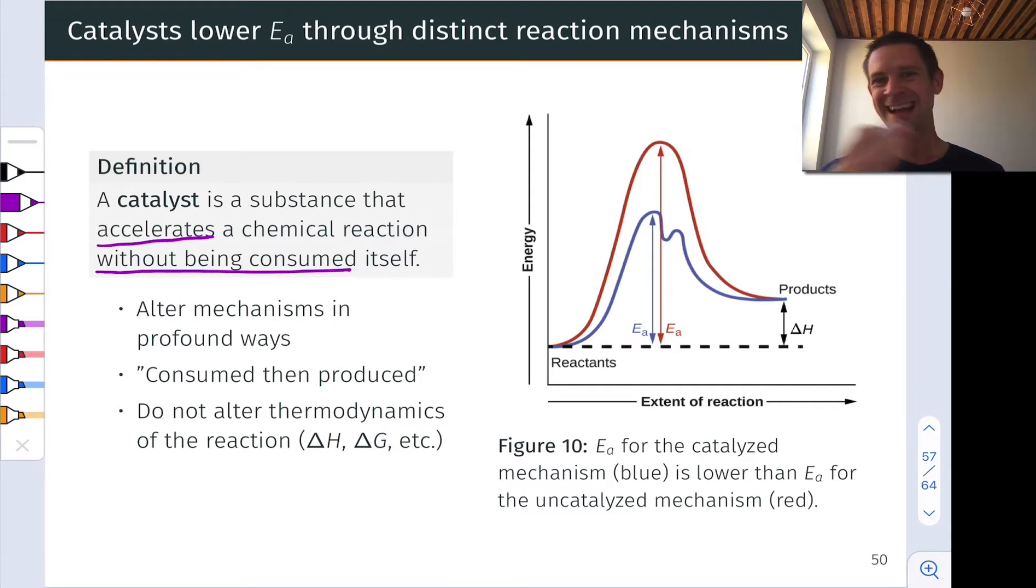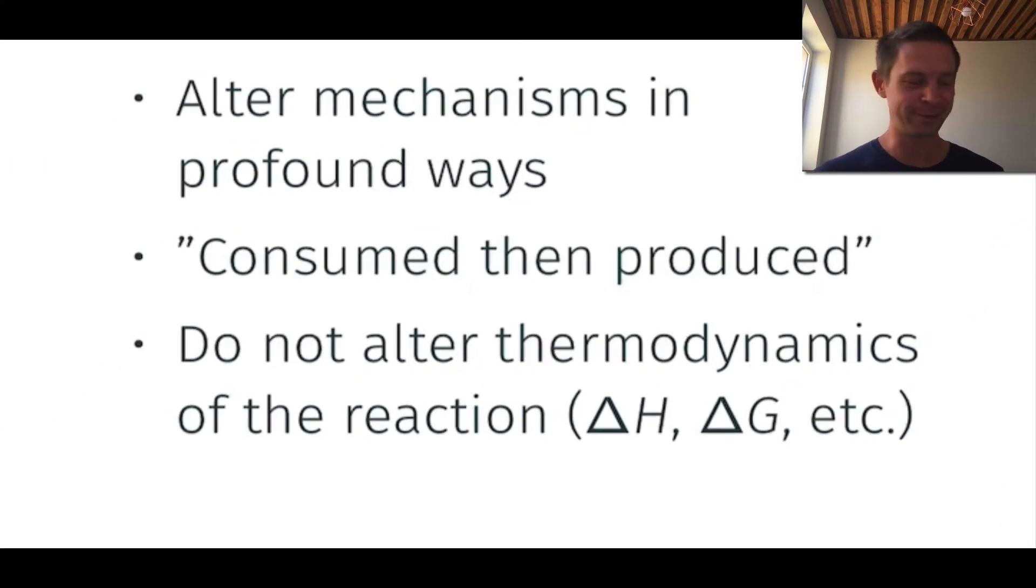This means that technically it's not a reactant and it's not a product. It's not consumed, so it's not a reactant, but it's also not net produced, so it's not a product. But it's something that gets used up in the mechanism but produced again later. We see that in the second bullet point here that mechanistically, catalysts are first consumed during the mechanism and then produced in a later step.